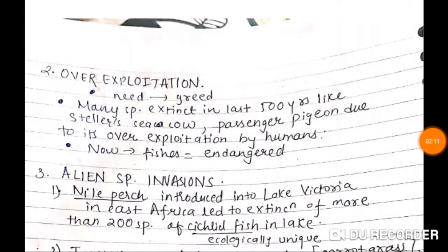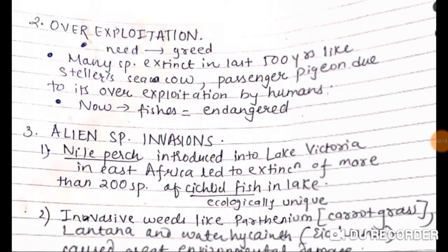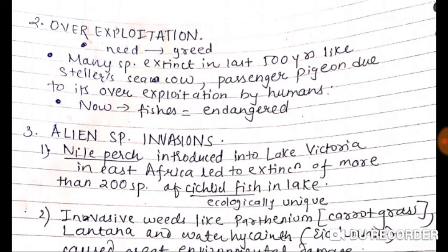Number 2 is over-exploitation — where need is turning into greed. Many species went extinct in the last 500 years, like Steller's Sea Cow and Passenger Pigeon, due to over-exploitation by humans. Now fishes are also endangered, and amphibians are also an endangered group facing extinction.